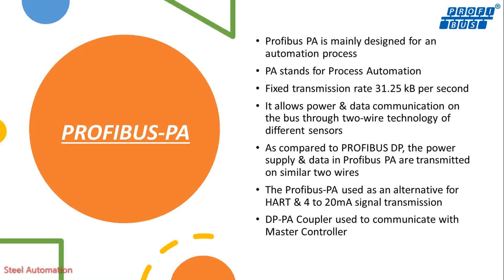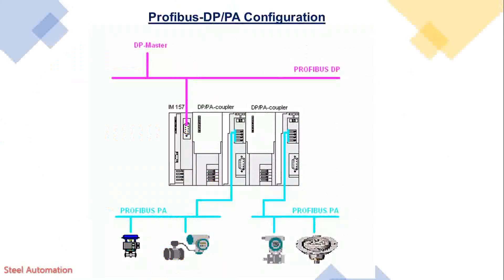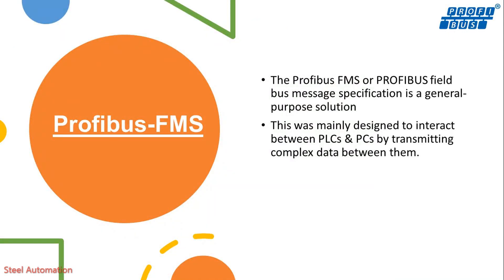A DPPA coupler is used to communicate with the master controller. Here is a configuration of a DPPA coupler used to establish communication between a PLC and instruments. Profibus FMS, or Profibus Fieldbus Message Specification, is a general-purpose solution mainly designed to interact between PLCs and PCs by transmitting complex data between them.